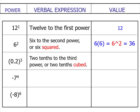In this case, we would prefer you read this as 2 tenths cubed. You can always say 2 tenths to the third power, but we prefer 2 tenths cubed. The value would be 0.008, or 8 thousandths.